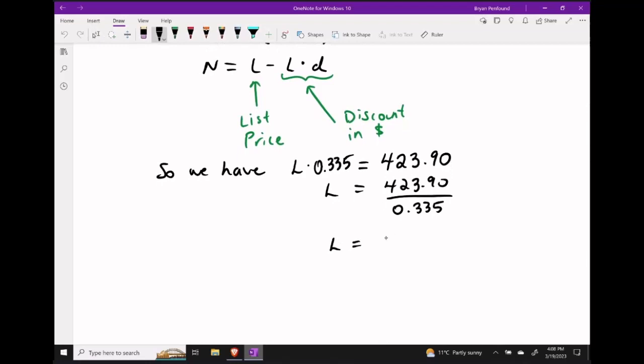Performing this division I get a list price of $1,265.37.